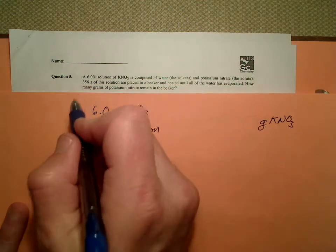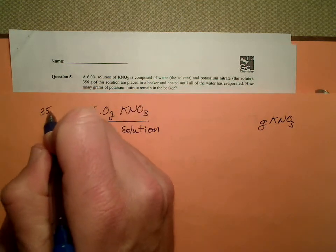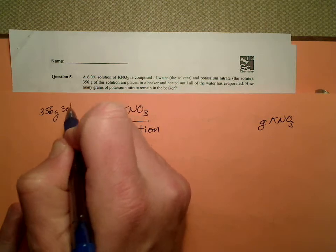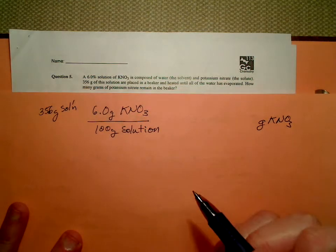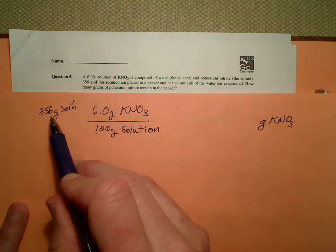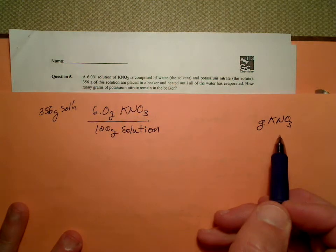And what else do we know? We have 356 grams of solution. We're going to have to get from grams of solution to grams of potassium nitrate.